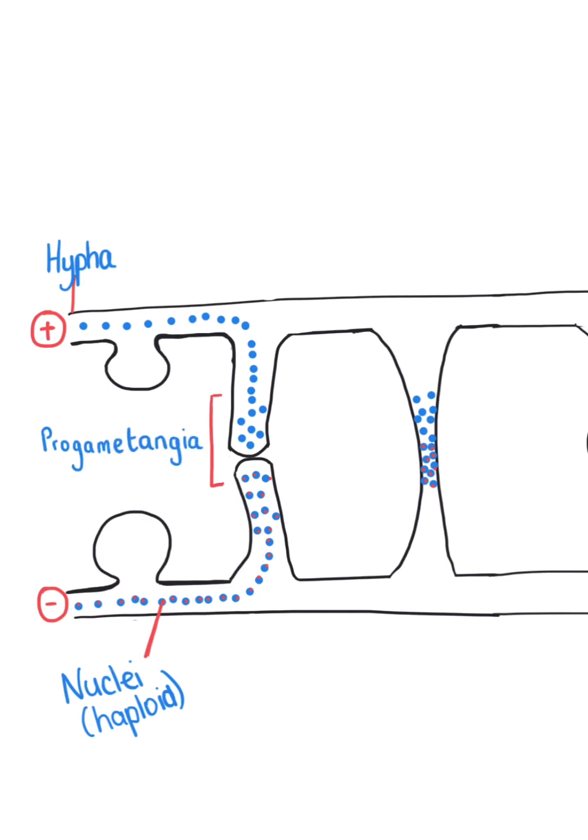After this, cross walls form, blocking in those nuclei and forming these structures known as gametangia.